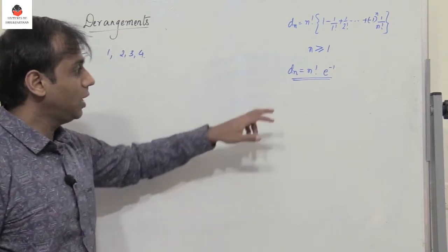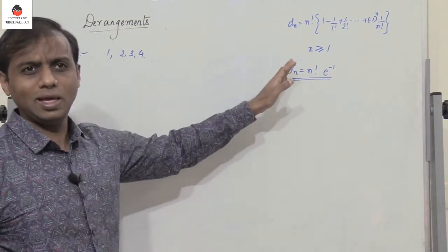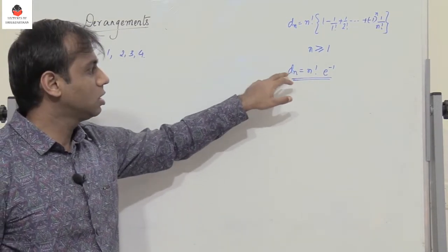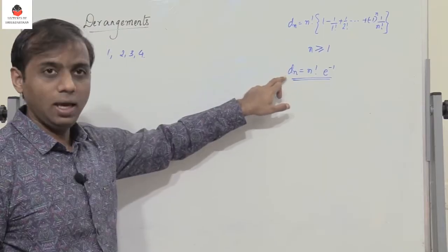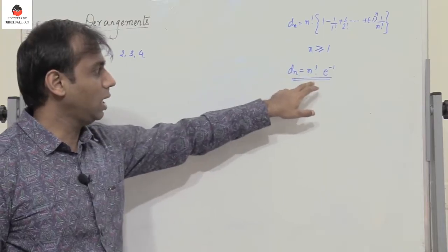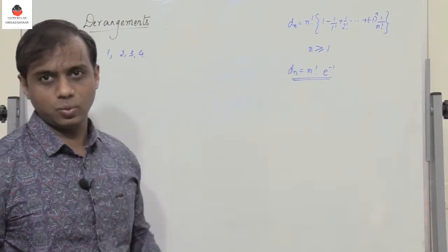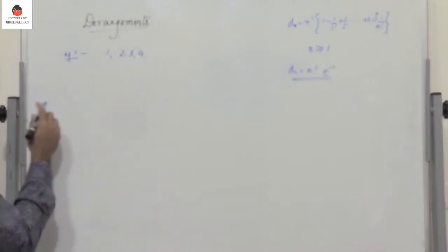If the value of n is very large, then Dn becomes n factorial times a constant which is e to the power minus 1. So if n is very large — beyond 8 or 9 — you can just write Dn equal to n factorial into e power minus 1.